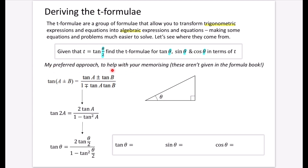This is my preferred approach, and it's to help with memorising because the formulae aren't given in the formula book. This thing — the addition formula for tan — is given in the formula book. What I'm going to do is manipulate it to come up with some other versions, giving us our first formula. This one is called the double angle formula for tan, and you can see how it's related to the addition formula.